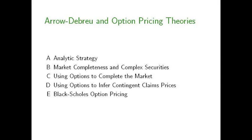We'll see how the information contained in option prices is particularly useful for making inferences about contingent claims prices, and how we can use the information in option prices to enrich and make much more realistic the examples we were considering before, moving well beyond simple toy examples where there are only two states. And finally, as promised, we'll conclude by seeing how the Black-Scholes option pricing formula works. The line of reasoning that leads to Black-Scholes is very similar to the reasoning underlying Arrow-Debreu theory, so today all of these ideas are recognized as being very closely related.